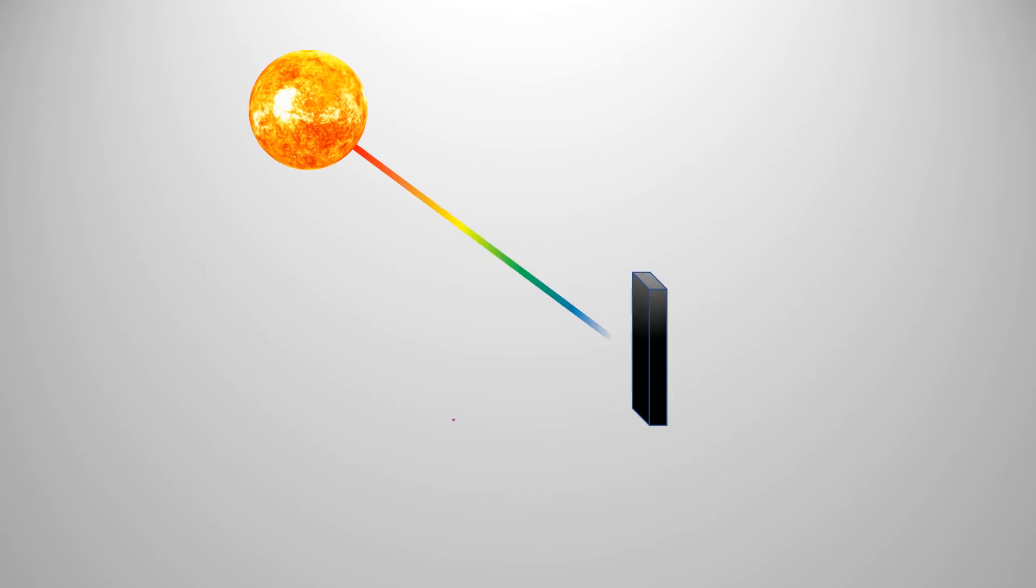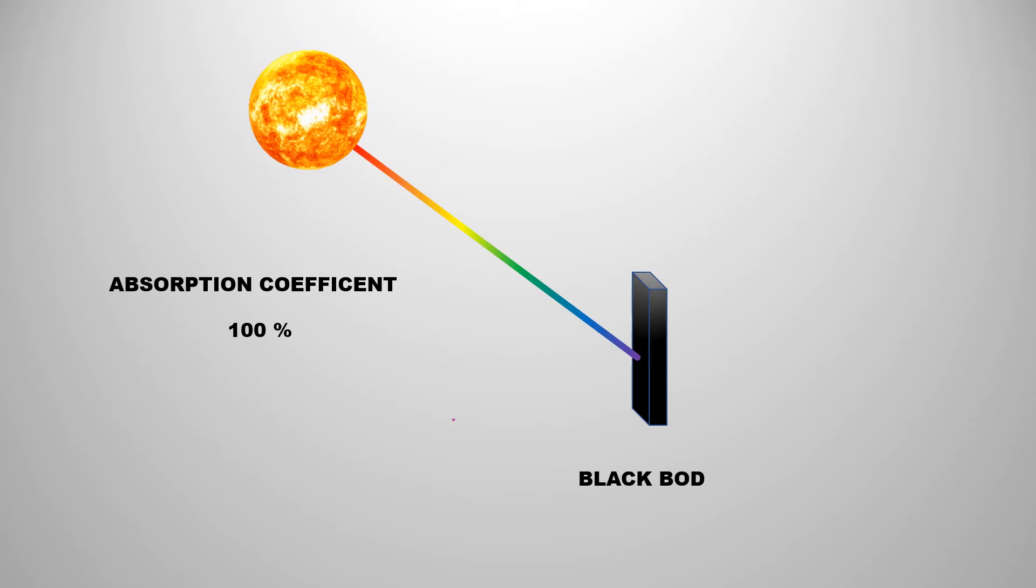If 100% of the radiation occurring on an object is absorbed, it is called a perfect black body. The absorption coefficient of such an object is 100%. In the ideal case, a black body can absorb the radiation of all types of wavelengths.